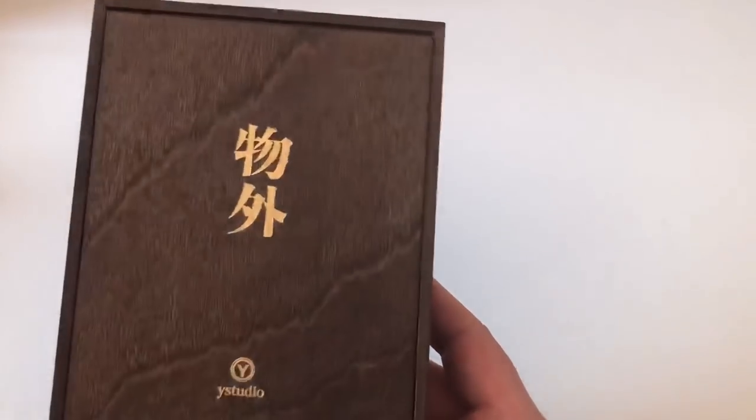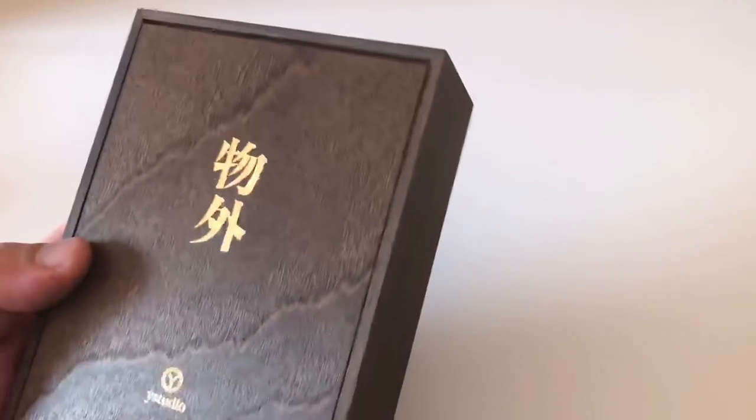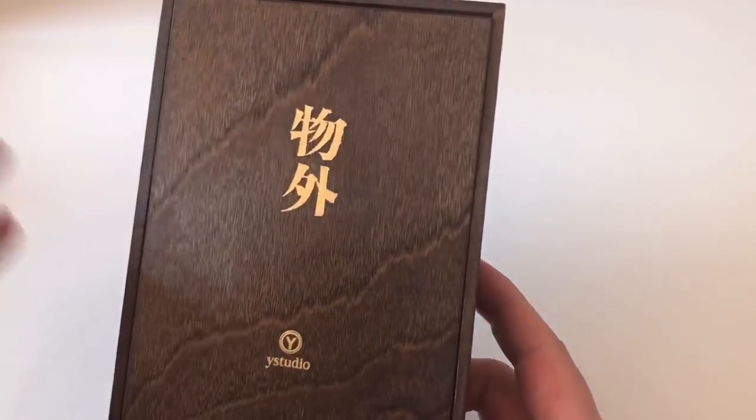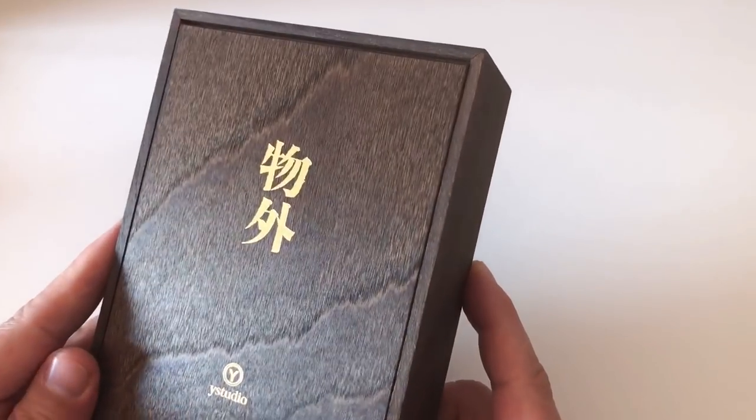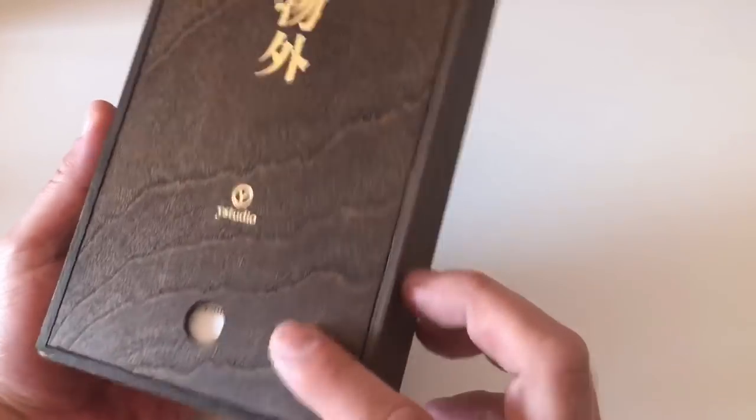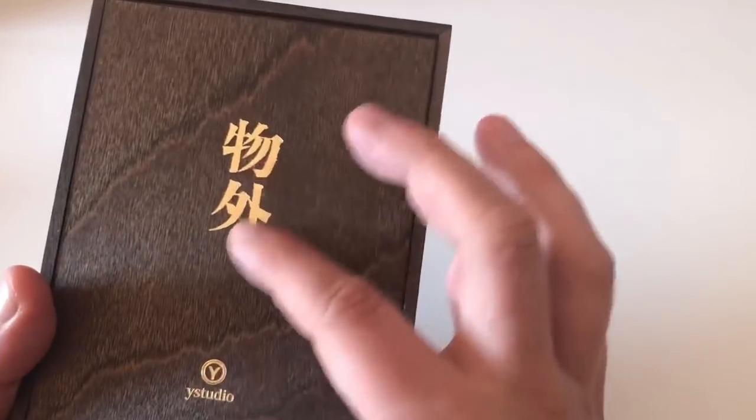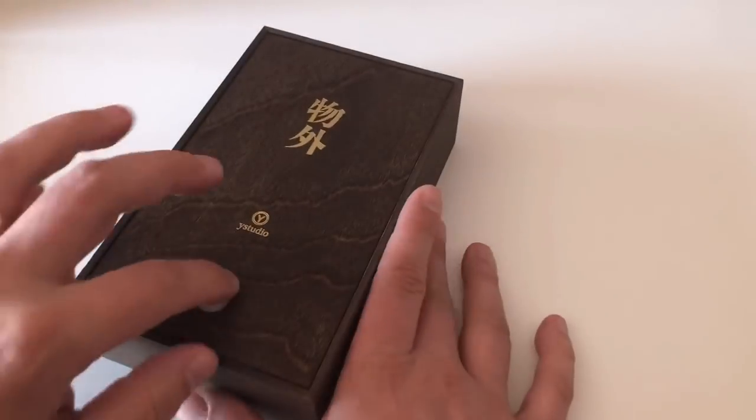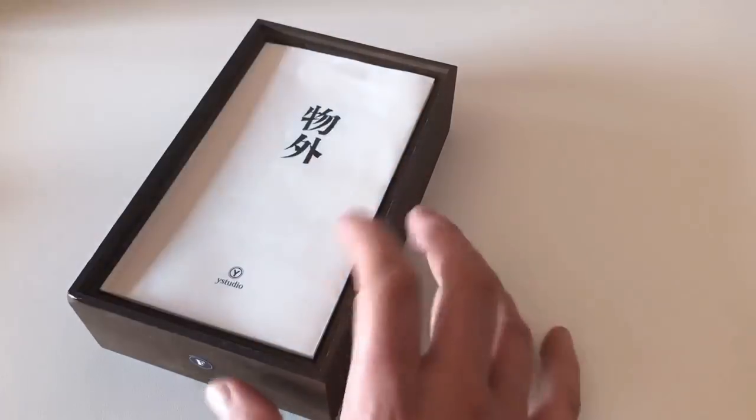We find a nice wooden box with some I assume Taiwanese letters because the company is Taiwanese based. I don't know what that reads or what it says. If I do have any Taiwanese viewers or viewers that speak Taiwanese, please leave me a comment about what it says here on the box. I'd be interested in that. Maybe it just says brassing fountain pen, I don't know.